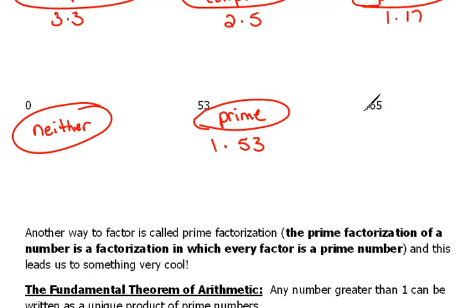And lastly here we have 65. 65 is a composite number. Now 1 times 65 is 65. But you know what? 5 times something is also 65.